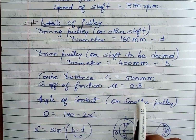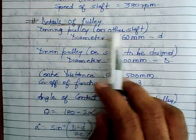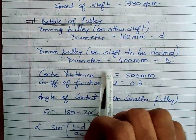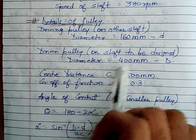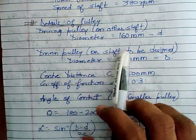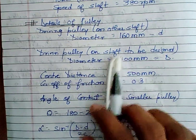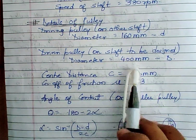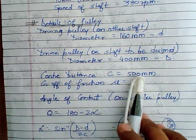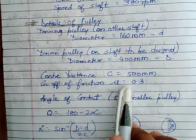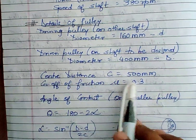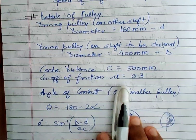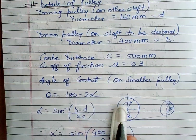Next, the details of the pulleys are mentioned. The driving pulley, located on another shaft, is around 160 mm in diameter. The driven pulley, located on the shaft to be designed, is 400 mm in diameter. The distance between the two pulleys is 500 mm. The coefficient of friction between the belt and pulley is 0.38, as mentioned in the problem. Now we need to calculate the angle of contact for the pulleys.